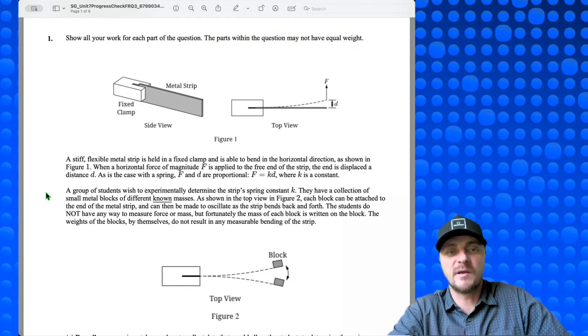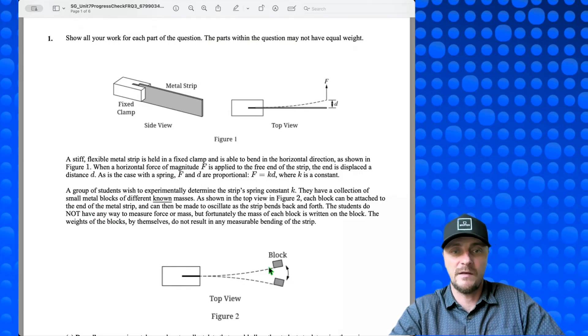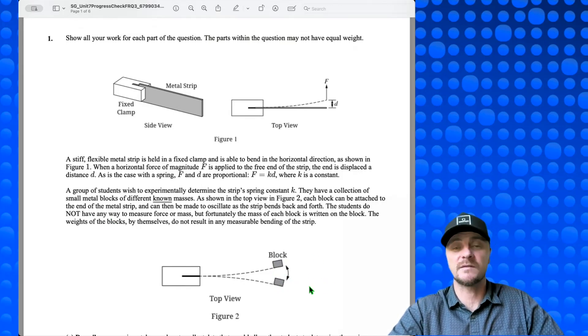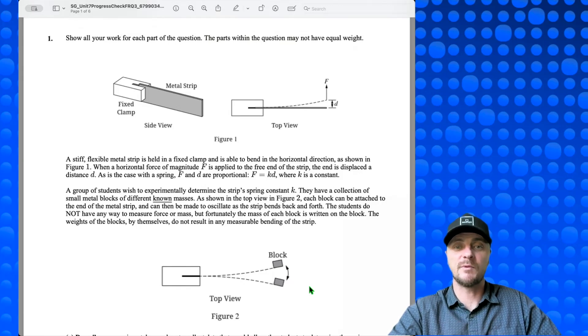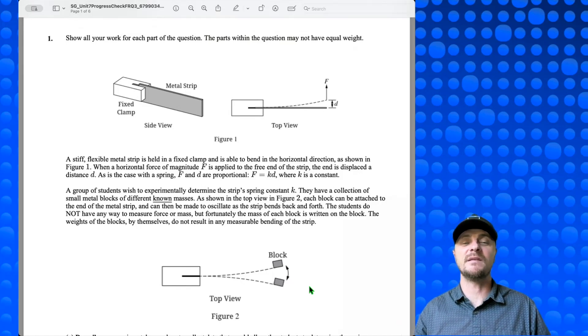Next paragraph. A group of students wish to experimentally determine the strip's spring constant k. They have a collection of small metal blocks of different known masses, as shown in the top view of Figure 2. Each block can be attached to the end of the metal strip, and they can be made to oscillate as the strip bends back and forth. The students do not have any way to measure force or mass. But fortunately, the mass of each block is written on the block. The weights of the blocks by themselves do not result in any measurable bending of the strip.